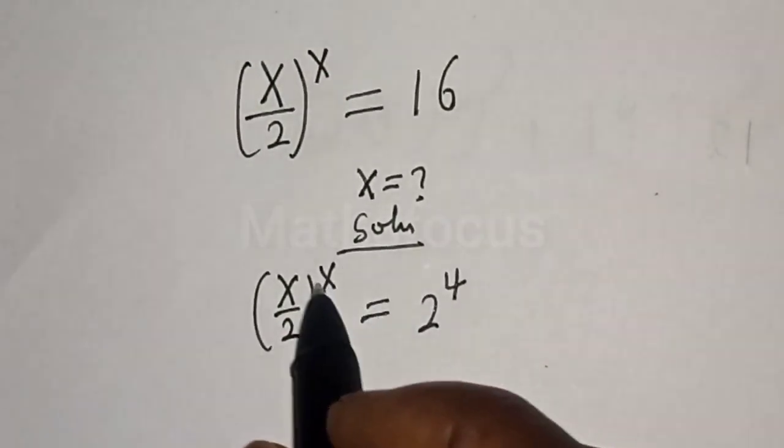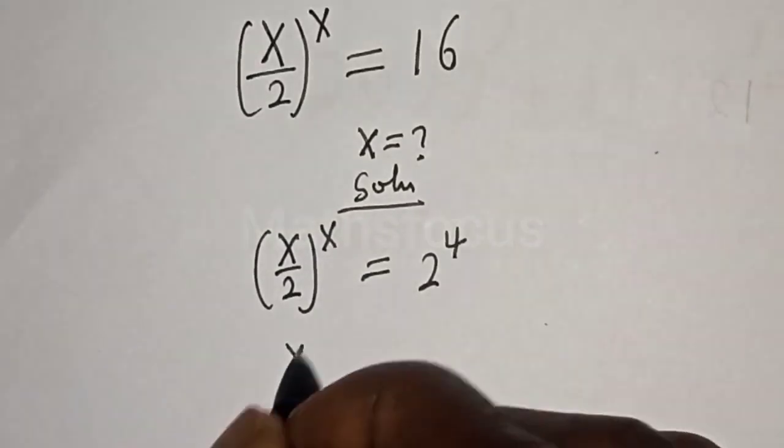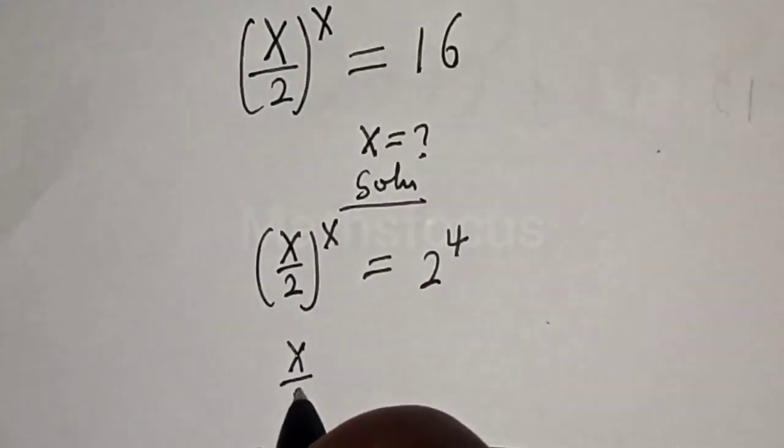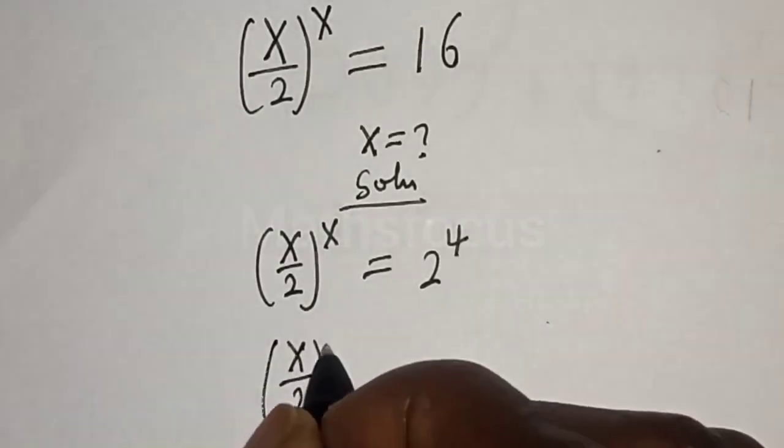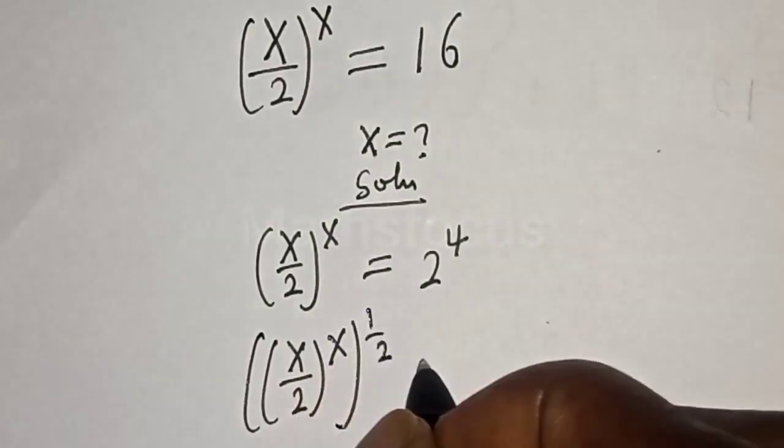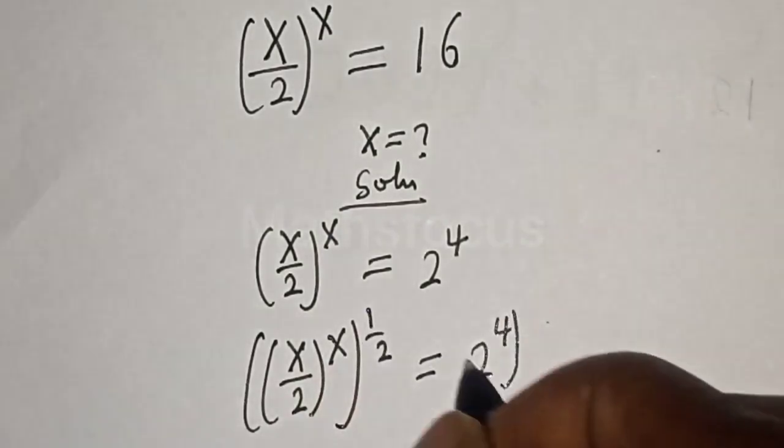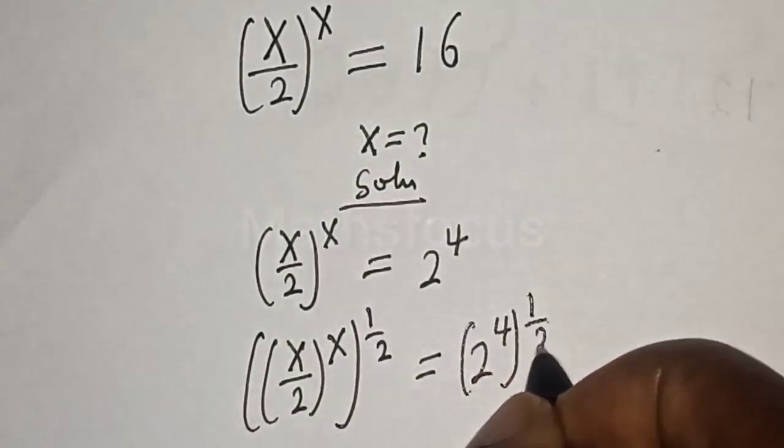Now let's multiply the exponent of both sides by one-half. So, S divided by 2, to the power of S, to the power of one-half, equals 2 to the power of 4 to the power of one-half.